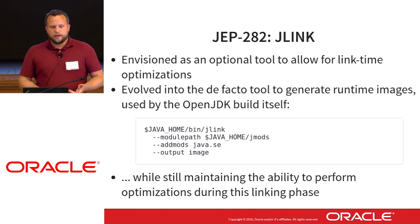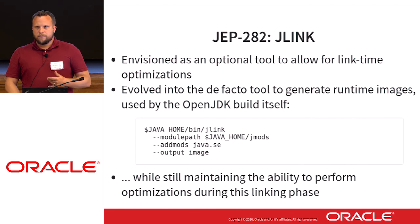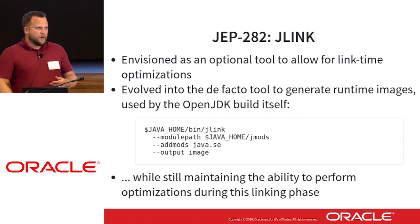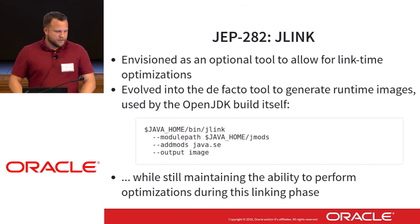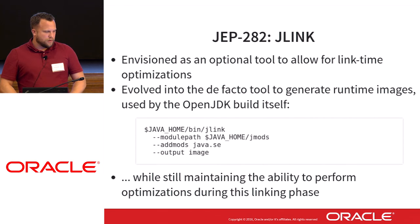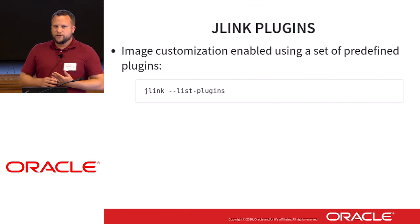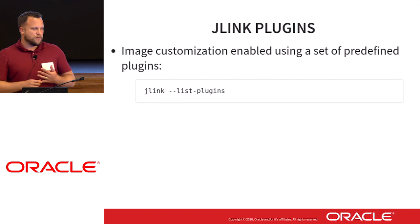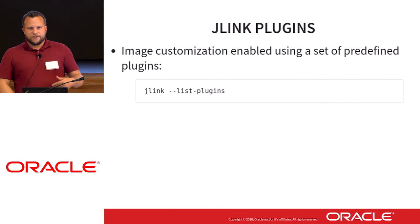We still need to maintain the ability to perform optimizations during this linking phase — both optimizations that we provide by default, and also customized optimizations that developers and customers can add on their own. This is provided by a mechanism called J-Link plugins, allowing customization enabled by command line flags to the J-Link tool.